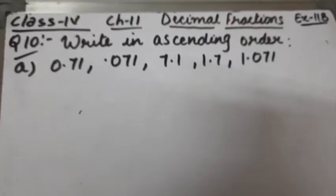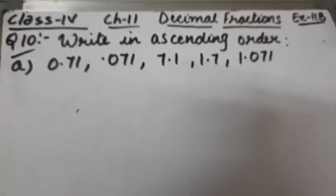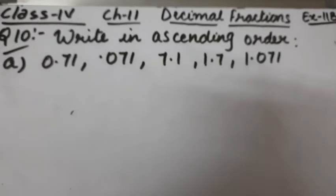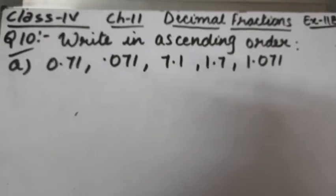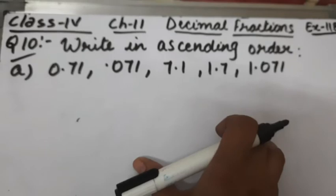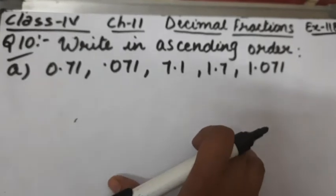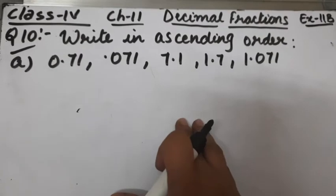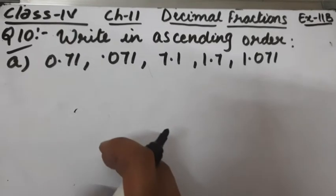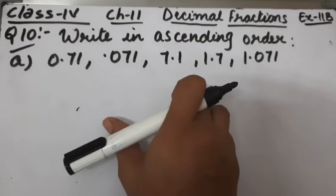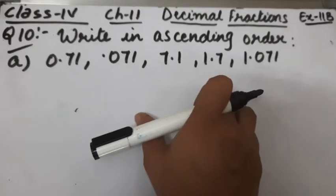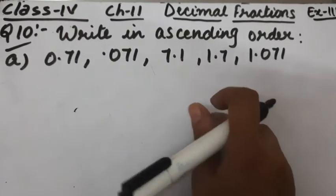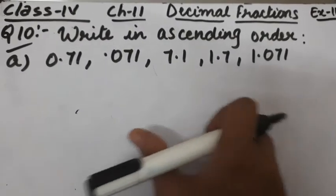Let's start question number 10 of exercise 11b. The question is to write in ascending order. Ascending order means arrangement from smallest to greatest. Here we are having decimal fractions and we have to arrange them in ascending order.